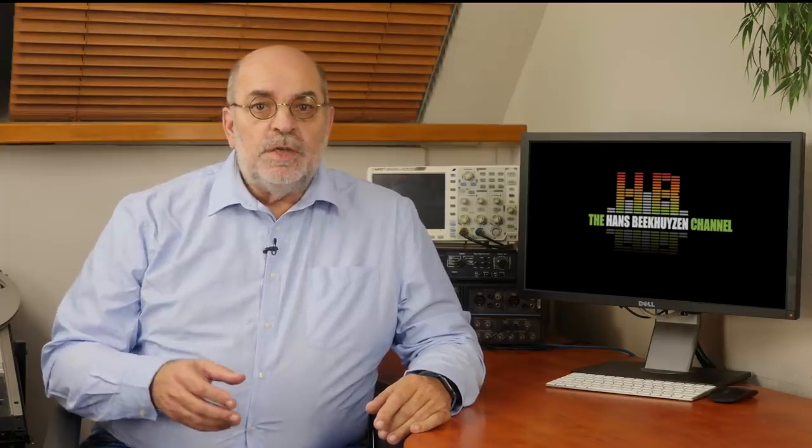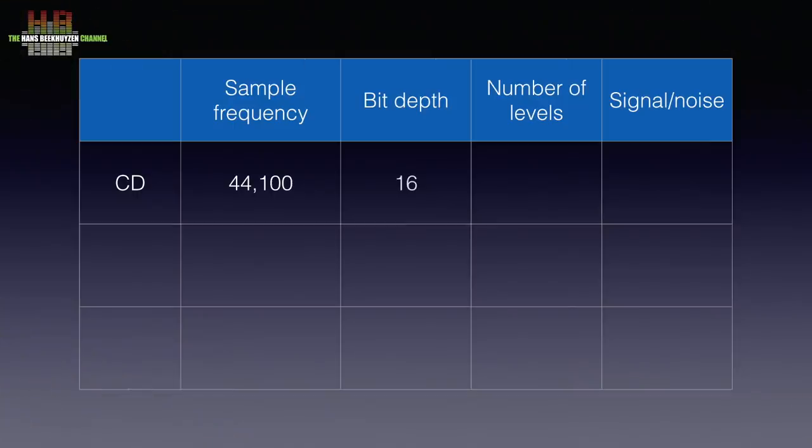Digitizing analog audio is done by measuring the amplitude at precise time intervals. For CD, 44,100 samples are taken with a precision of 16 bits. Using 16 bits gives 65,536 discrete levels, offering 96 dB signal to noise.